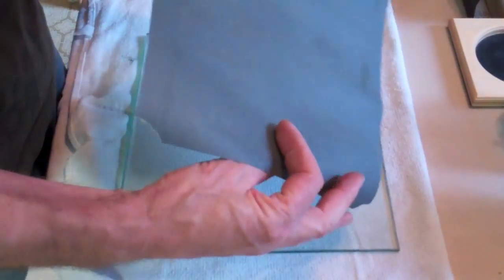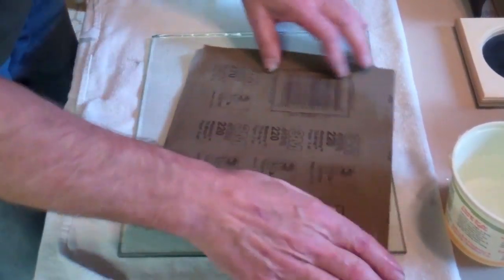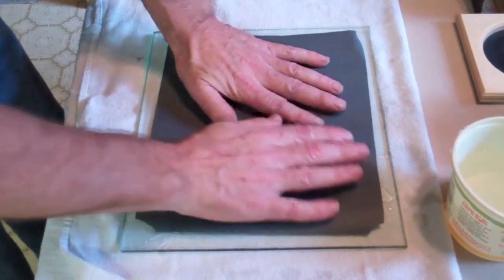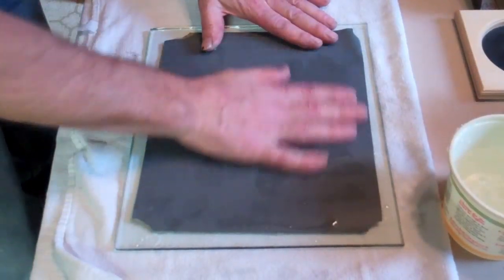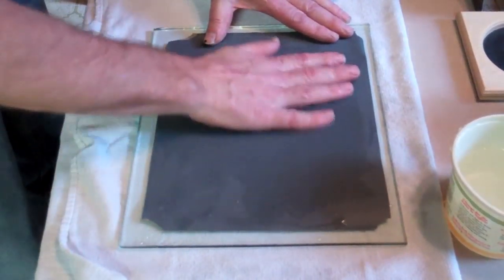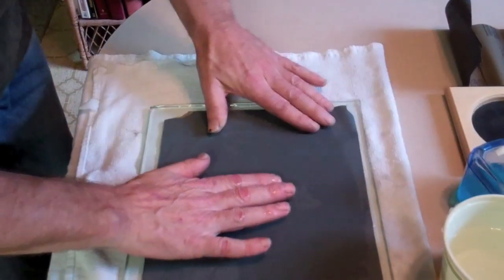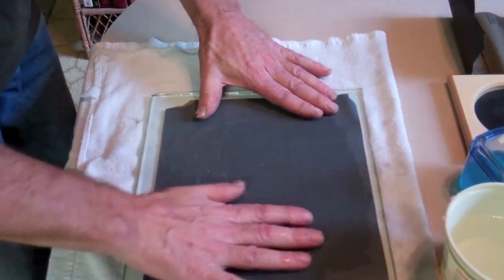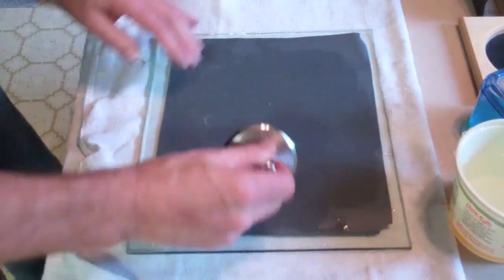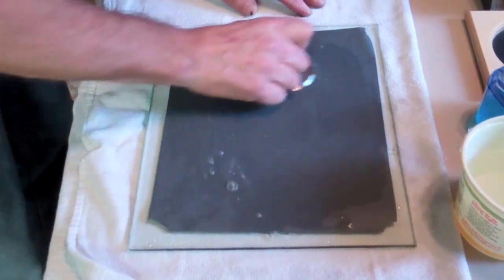Then you're going to take the 220 paper, 220 sandpaper, and you're going to take some water and you're going to wet it. And then you're going to put that over onto the glass. Then you're going to take some water and put it on the surface of this. Then you're going to take one drop of soap and you're going to put that on there. And what the soap does is it keeps the grits from clogging up the sandpaper.